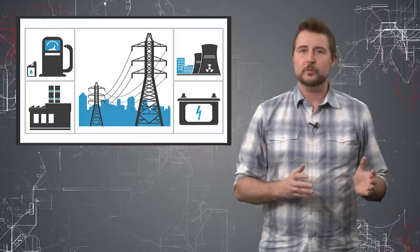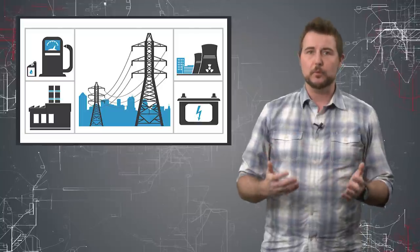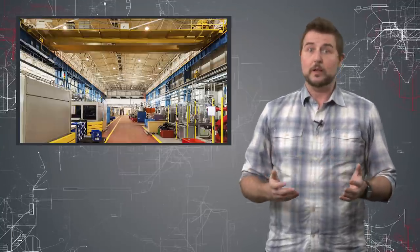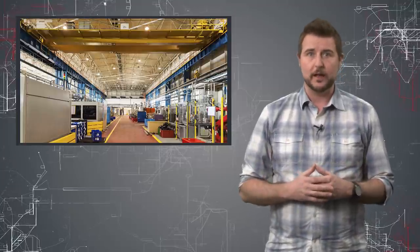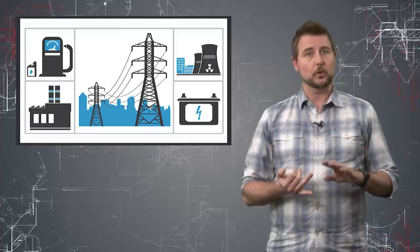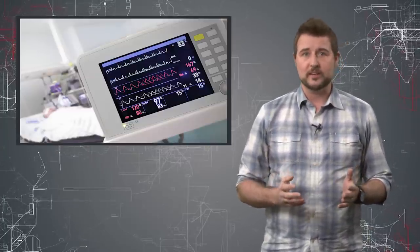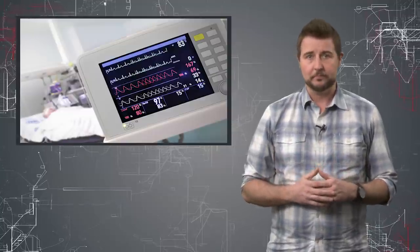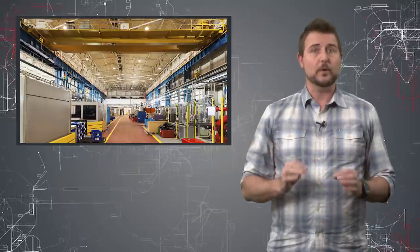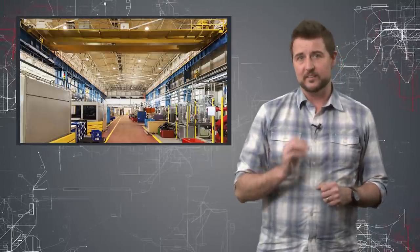And that really comes down to the difference in certain industry verticals that have operational technology networks. So think of people like Boeing who have manufacturing lines, or think of critical infrastructure like oil pipelines or energy systems, or even think of healthcare organizations that have specialized equipment. As you can probably tell, this problem all comes down to operationalized Internet of Things devices.